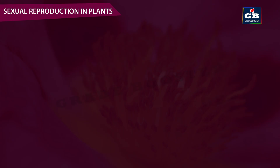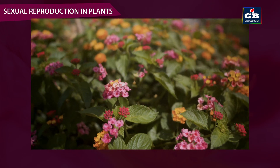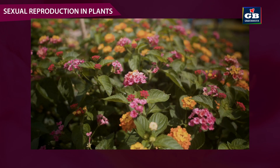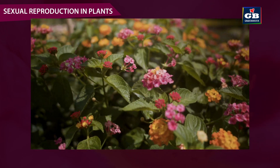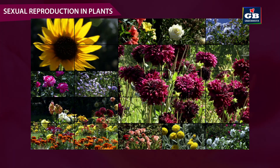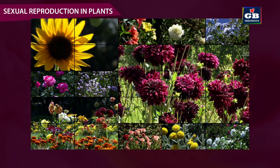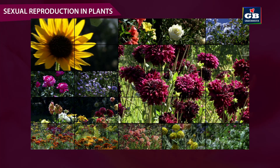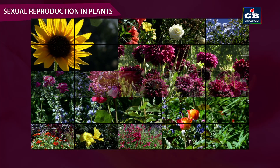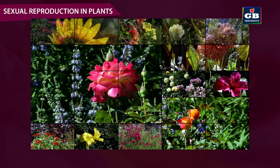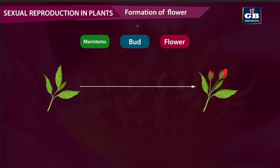Sexual reproduction in flowering plants: flowers are the parts meant for sexual reproduction. They attract pollinators with their colors, scents, and shapes. In this video we are going to see the formation and development of flowers. We all know that a flower is formed from a bud — a bud grows and develops into a flower. But from where does this bud come from? It comes from meristematic tissue.